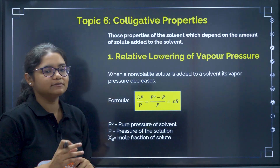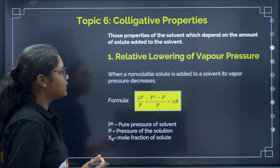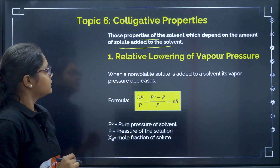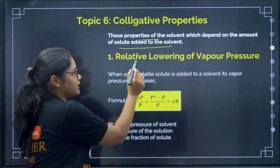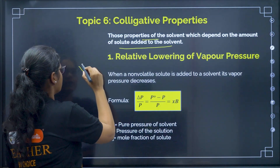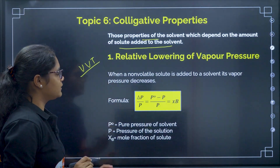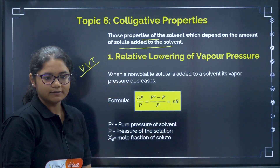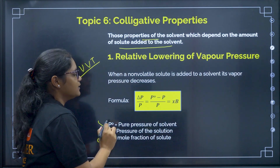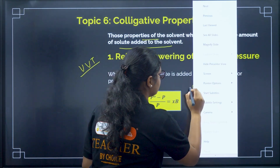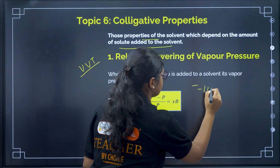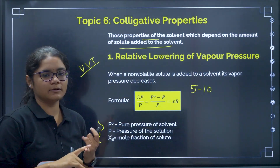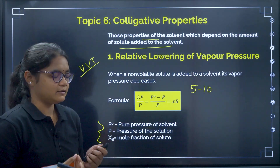Next is the very important topic — colligative properties. The properties of the solvent depend on the amount of solute added. First colligative property is relative lowering of vapour pressure — very important for numericals. The formula is ΔP/P° = (P° − P)/P° = mole fraction of the solute. Practice a minimum of 5 to 10 numericals from this topic. Source will be your NCERT book or any previous year question papers.